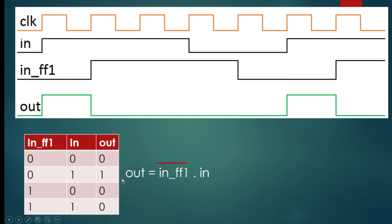From this truth table you can easily derive the expression for the out signal. We simply need to see wherever it is one - it is one only at one point. At that point, 'in_ff1' is zero, so we put bar on 'in_ff1', and 'in' is one, so the expression is: out = in_ff1_bar · in.